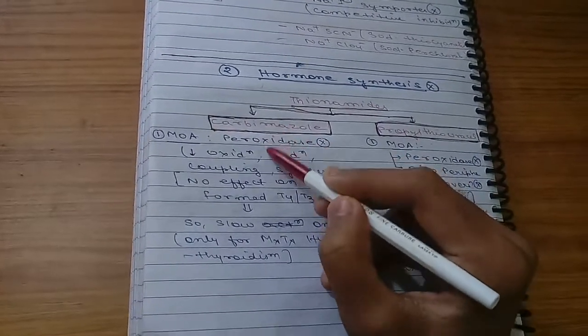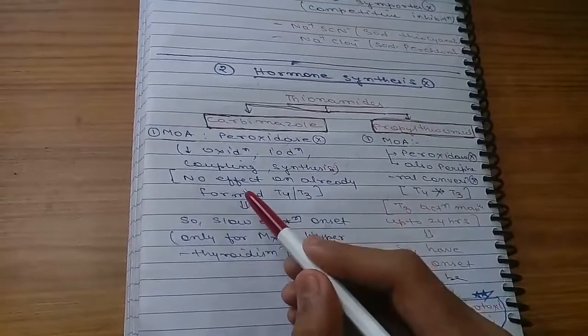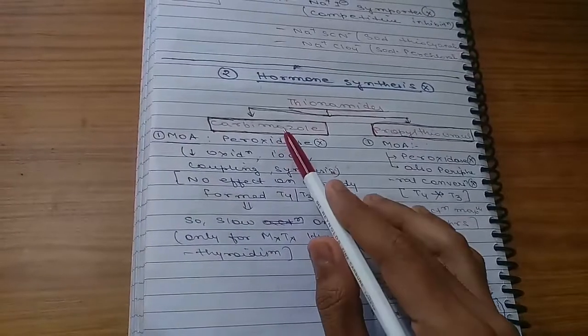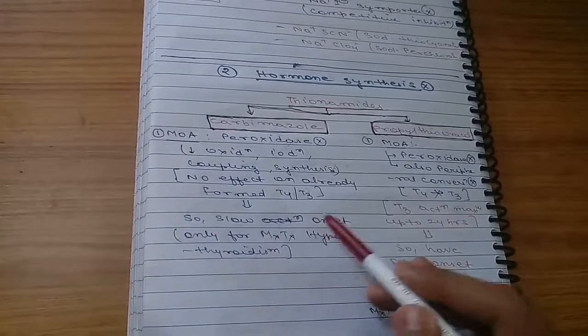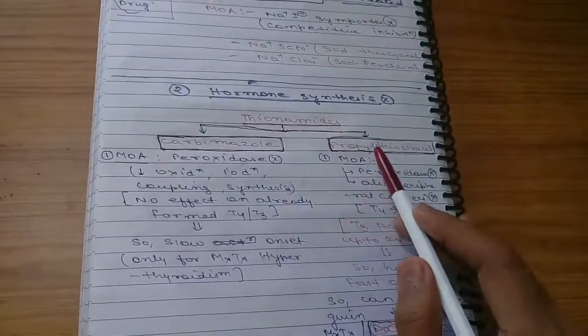Carbimazole will inhibit this peroxidase enzyme. There will be inhibition of the formation of thyroxine, but there will be no effect on already formed T4 and T3. Because of this, carbimazole has slow onset, so it can be used only for maintenance treatment of hyperthyroidism.